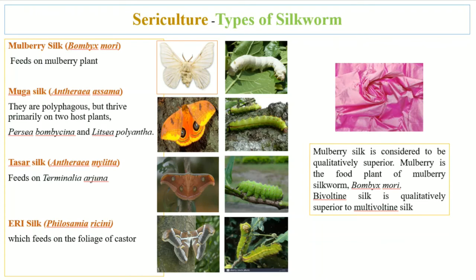Bivoltine silk means that the silk is produced by the insects in two broods in a year. Two broods are produced per year, meaning the silk is produced two times a year. In this way, mulberry silk is qualitatively superior over multivoltine silk.